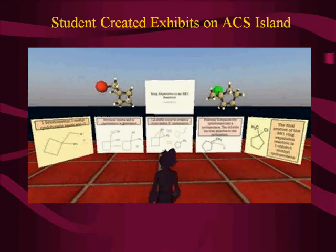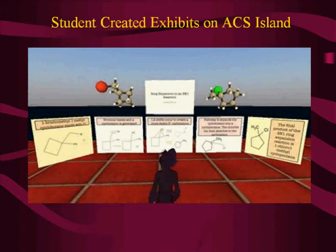Here's another example — a larger poster showing an SN1 reaction with a ring expansion, going from a 4-membered ring to a 5-membered ring. This is something that's very difficult to show on paper. It's one of the hardest things to show — what happens when you get a 1,2-shift and there's a ring expansion. Because you can use 3D in Second Life, it's just an additional way of conveying that concept.